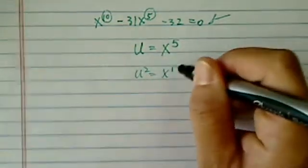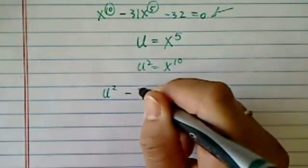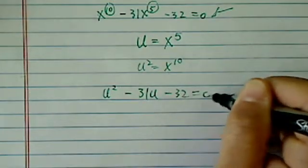Then u squared becomes x to the tenth. So our original equation becomes u squared minus 3u minus 32 equal to 0.